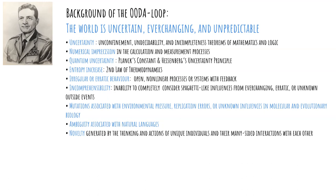Besides all of that, we have to contend with irregular or erratic behavior from open, non-linear processes or systems with feedback. Incomprehensibility, because we are unable to completely consider spaghetti-like influences from ever-changing, erratic, or unknown outside events. Mutations associated with environmental pressure, replication errors, or unknown influences in molecular and evolutionary biology, like, for example, new viruses or other infectious diseases.